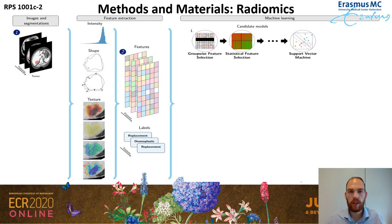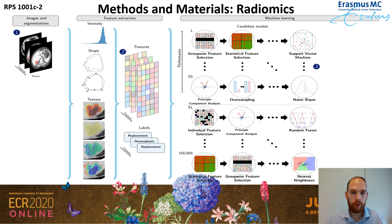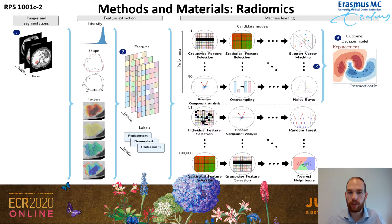We can then use machine learning and pre-processing methods to create a decision model. There's a wide variety of machine learning and pre-processing methods available, and we don't know beforehand which will be most suitable for our application. Therefore, we use a platform in which we've collected a wide variety of methods and use automatic algorithm optimization to determine the most optimal combination of parameters and methods, giving us the best decision model.